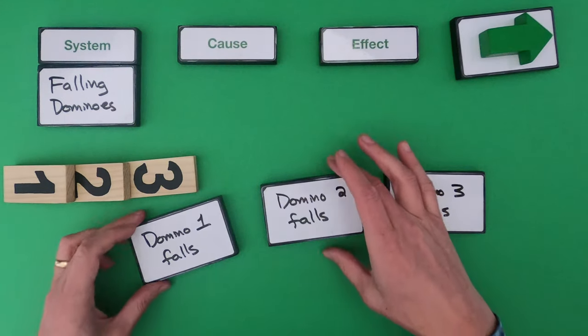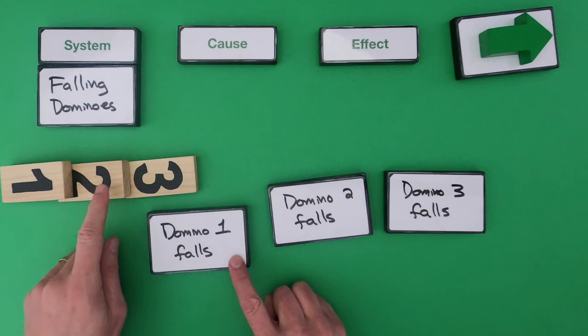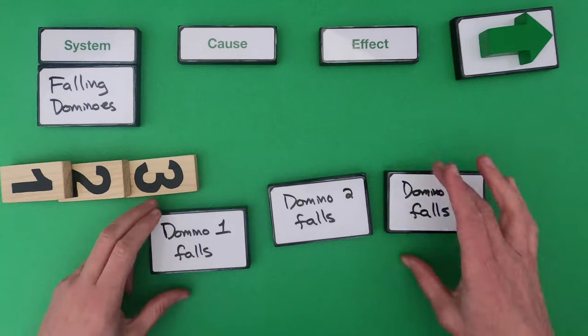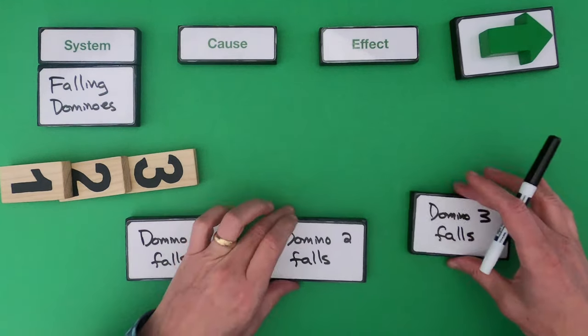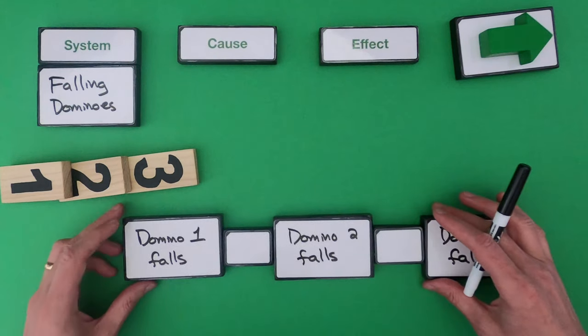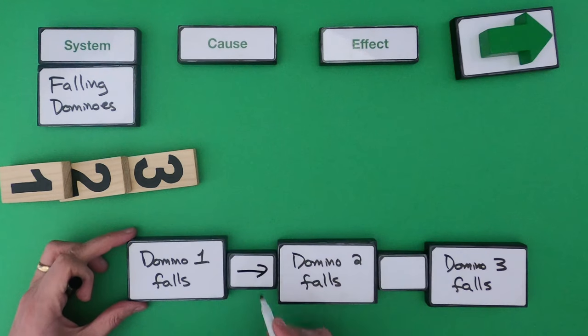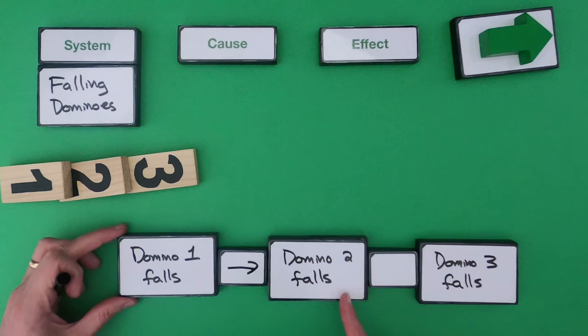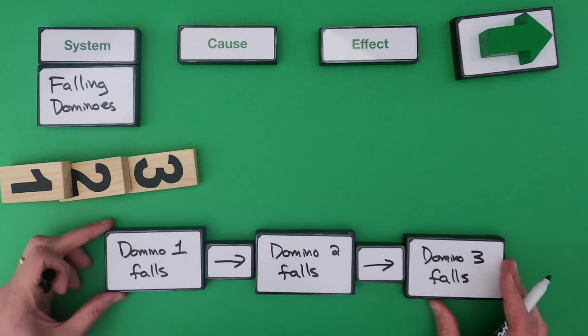So the three events that I saw was domino one falling over and that's knocking on domino two which is eventually causing domino three to fall. And so the relationship that I would identify in this system would be the following. So domino one falls that causes domino two to fall and then domino two falls and that causes domino three to fall.